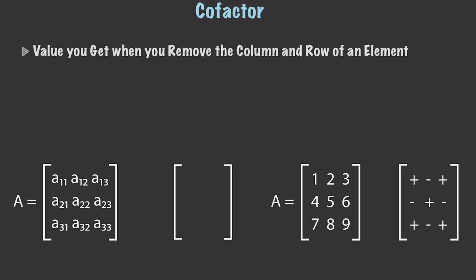In this example, I'm going to find the cofactor for A22. That means I need to get rid of the column and the row for it — so I get rid of that row and that column. What does that leave me? It leaves me with 1, 3, 7, and 9. I find the determinant for what is left: A×D minus B×C, which is 1×9 minus 7×3, giving us a value of negative 12.